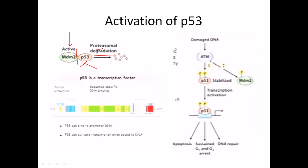Now the actual machinery of p53 activation: suppose there is damaged DNA, sensed by ATM — the sensory protein. ATM in turn activates p53 via phosphorylation. An important point: p53 is not a kinase molecule. That is a very important mistake students make. p53 is not at all a kinase — it is a transcription factor, an important transcription factor inside the cell.